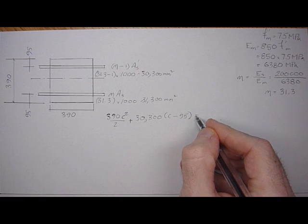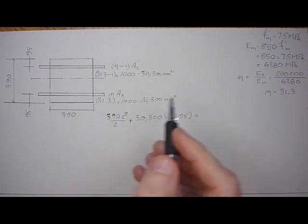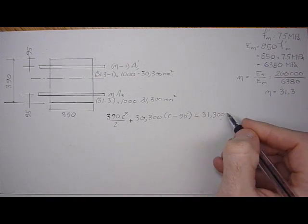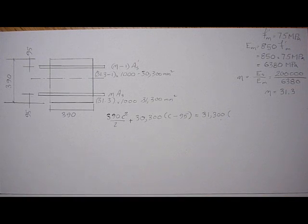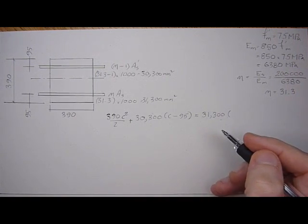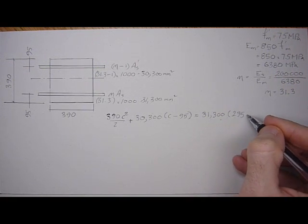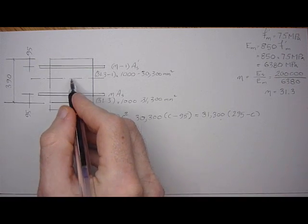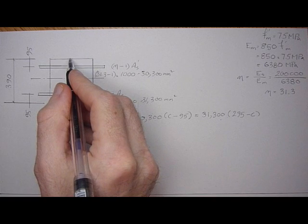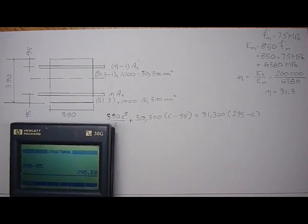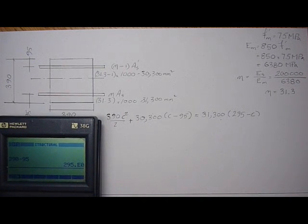And then below the neutral axis we have the transformed area of the tension steel, which is 31,300 times D. And D is going to be 390 minus 95, which is 295 minus C. So the distance from here to here is 295 minus this distance, giving us this distance. And then we can set this into the solver and solve for C.